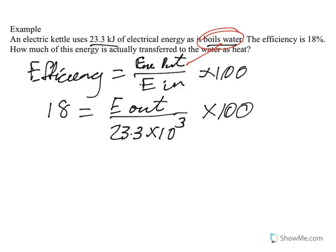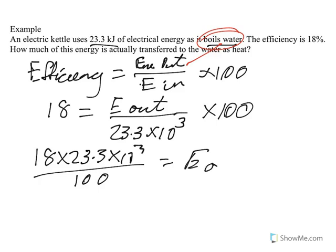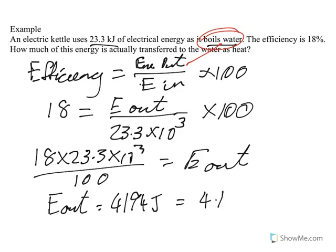So that's times 10 to the 3 times 100. So if we times both sides by 23.3 by 10 to the 3 and divide both sides by 100, we'll get the energy out. And so the useful energy out will be 4,194 joule, which is 4.194 kilojoule.